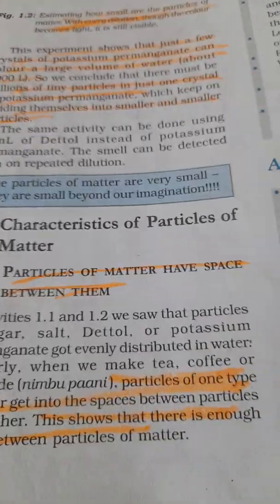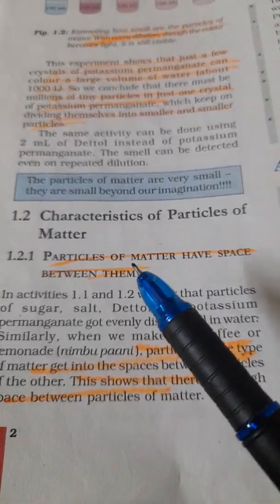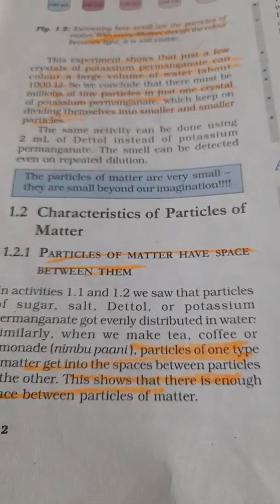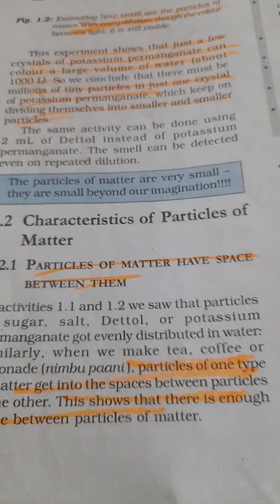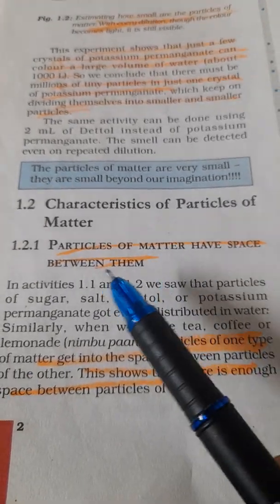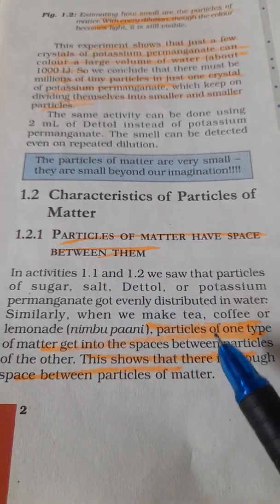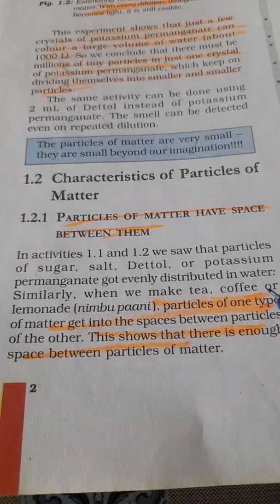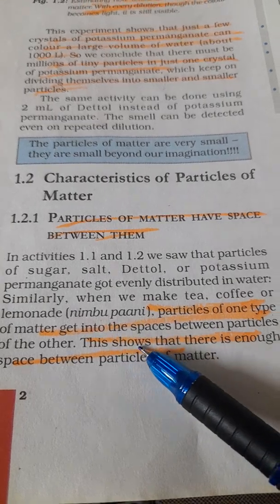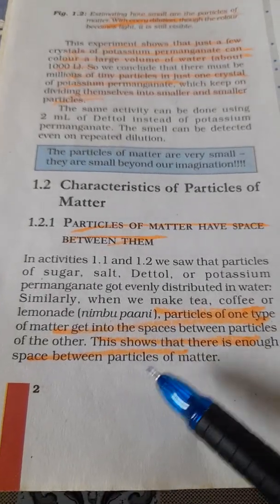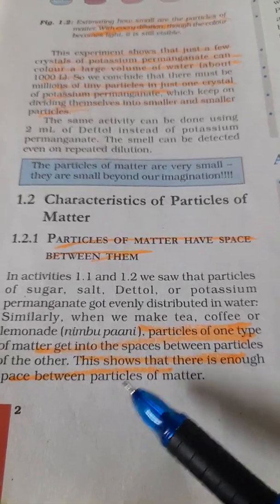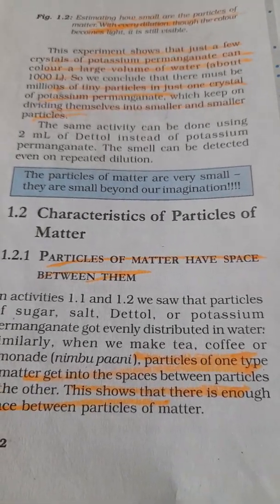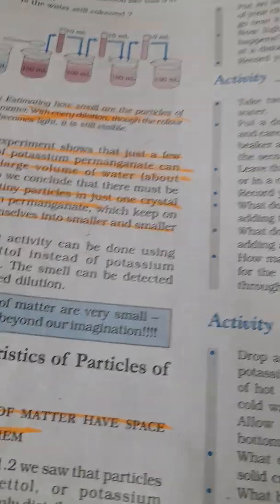Now the next topic is characteristics of particles of matter. What are the characteristics — meaning the behavior? The first characteristic is that matter particles have spaces in between them. Whether it is tea, coffee, lemonade or whatever — the particles of one type of matter can get into the spaces between particles of another type of matter. This shows there is enough space between the particles of matter so that they can intermix.